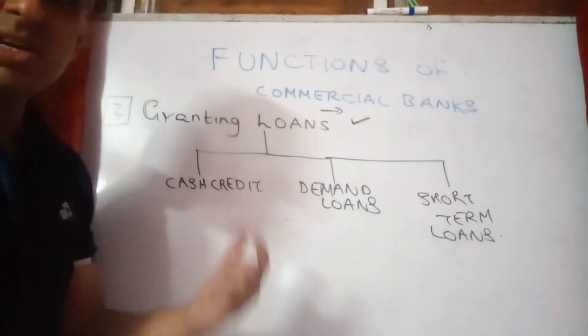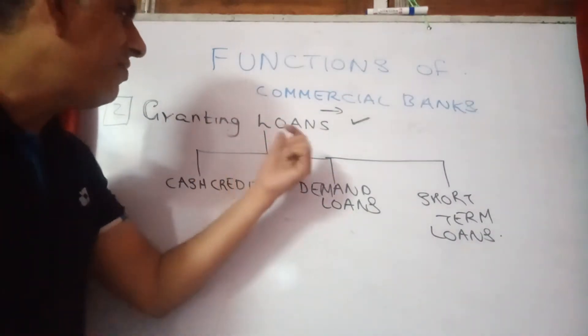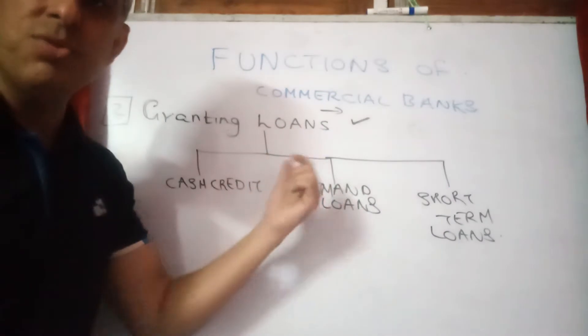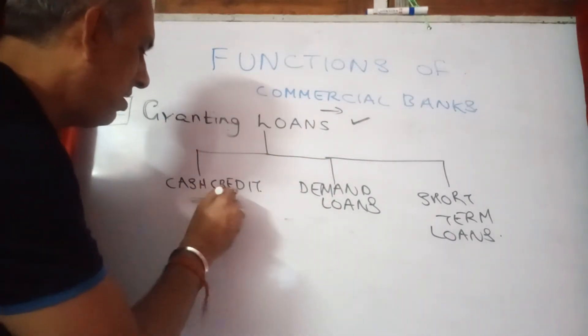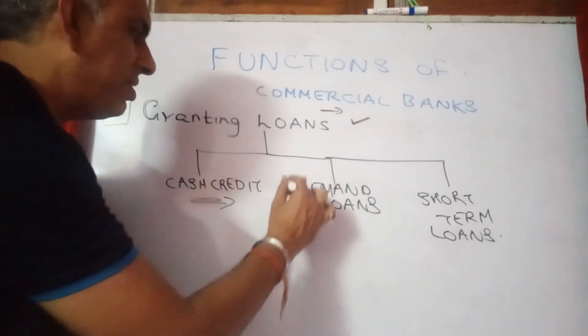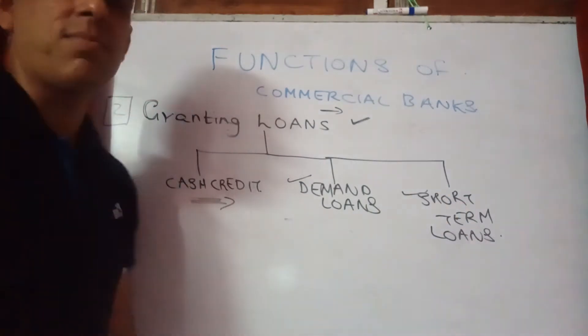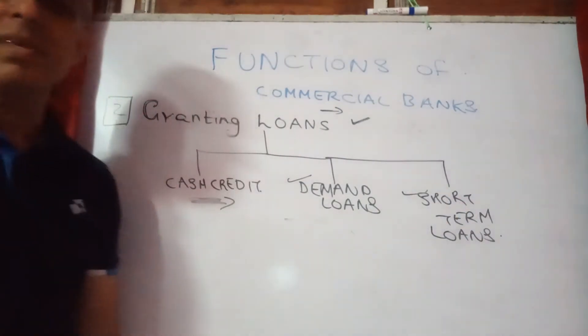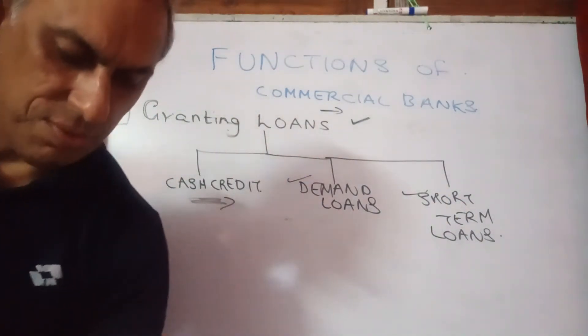What are these various facilities in granting funds or granting loans? Number one is cash credit. Number two is demand loans. And number three is short-term loans.